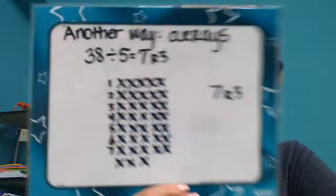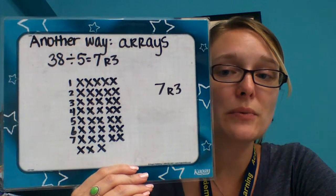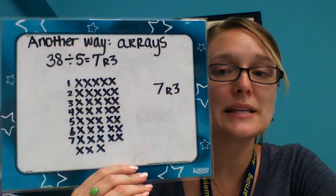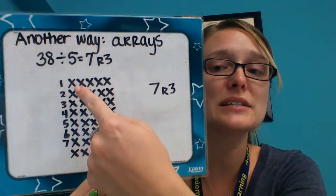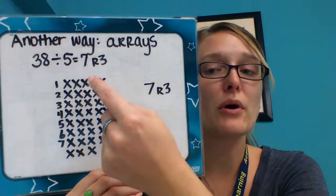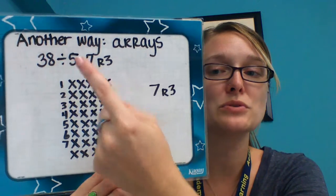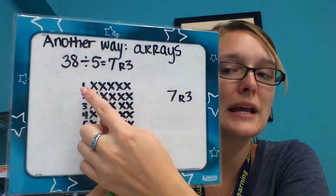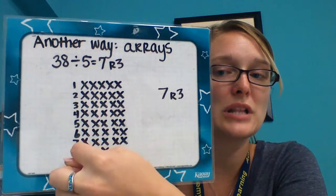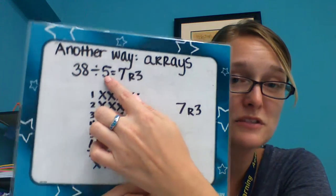If that way doesn't work for you, another way to stay organized is to use arrays. Some of us have tried using this already. Arrays are another way to stay organized and to clearly see without having to draw circles and little dots. Instead you use X's, or if you have a fine enough pen you could even do numbers. I used X's here and I kept track of how many were on each line. The first thing I did was go 5 X's because my divisor is 5 — I made rows of 5.